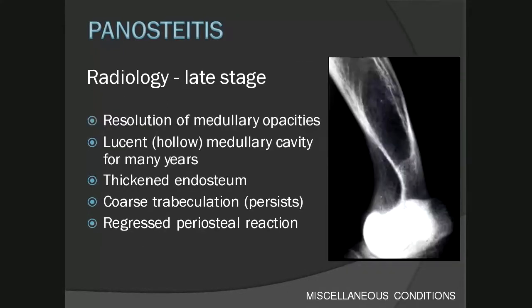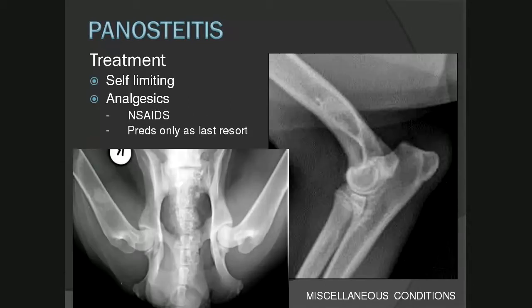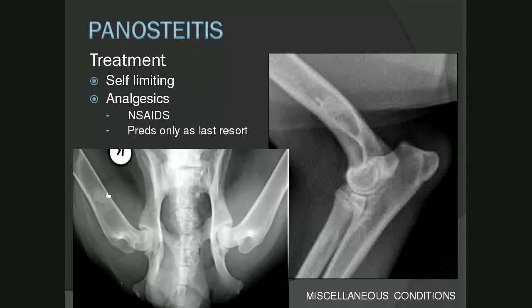In the middle stage, medullary opacities start to coalesce, involving a greater area of bone, the endosteum may become irregular, and trabeculation may be coarse. There may also be a mild solid periosteal reaction, which indicates a benign condition. In the late stage, medullary opacities resolve and the medulla looks empty or hollow, which can persist for many years. The endosteum may remain thickened and trabeculation may remain coarse. Examples shown include a thumbprint-like opacity within the right femur and a subtle finding in the distal humerus.